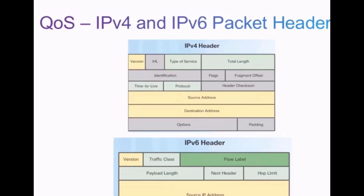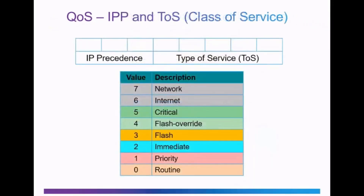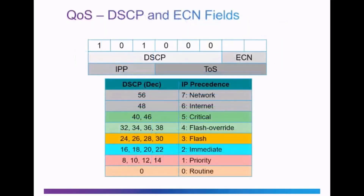At Layer 3, QoS is implemented in the IPv4 and IPv6 packet headers in the Type of Service field and the Traffic Class field. In the older implementation, class of service at Layer 3 was implemented using IPP and TOS. IP Precedence is 3 bits and Type of Service is 5 bits, making up the full 8 bits. The classifications have 8 levels which map to the Layer 2 Class of Service, including routine, priority, immediate, flash, flash override, and critical. Values 6 and 7 are reserved for network control. The current implementation uses the Differentiated Services Code Point and Explicit Congestion Notification fields — DSCP and ECN — which map directly over the 8 bits of the IPP and TOS fields, and the DSCP field is backwards compatible with the IPP field.